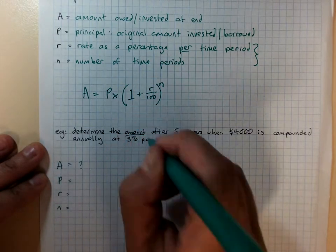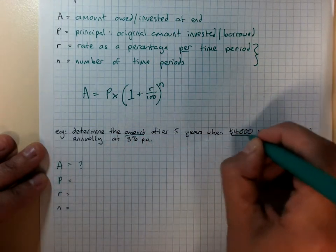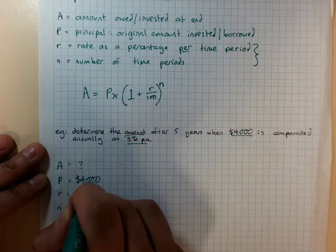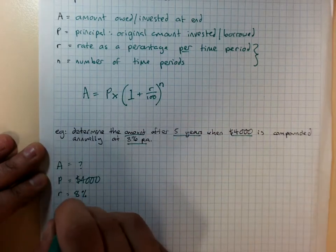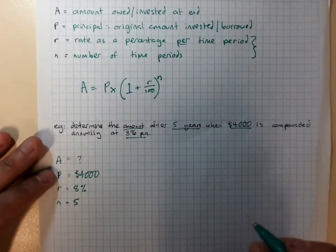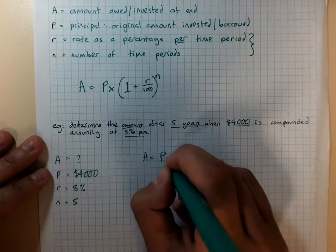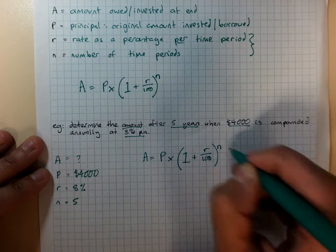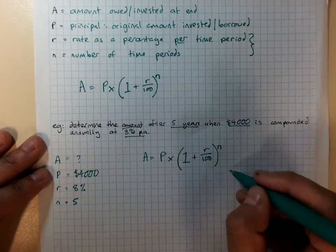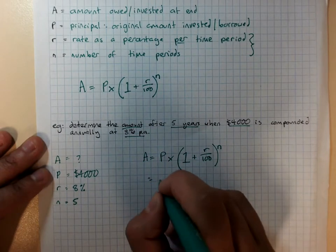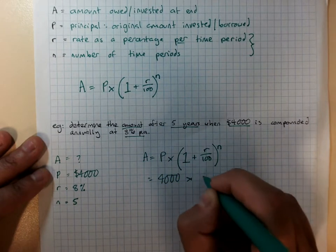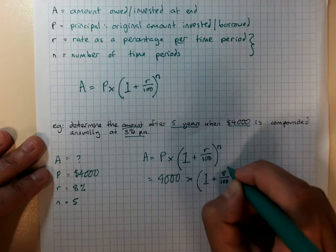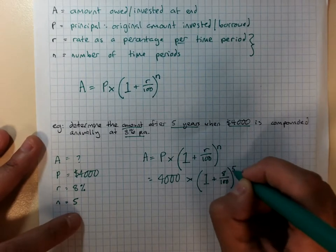We need to find the amount. Principle, $4,000. Rate, 8% per annum. N, 5 years. Write your formula. A equals P times in brackets 1 plus R on 100 to the power of N. Write your formula. Substitute in the values. 4,000 for the principle times 1 plus 8 over 100 close brackets to the power of 5.